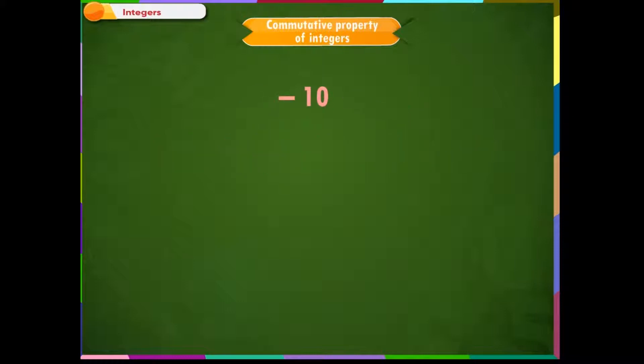Minus 10 plus minus 34 is equal to minus 10 minus 34 is equal to minus 44. After interchanging the addends, we get the same sum.